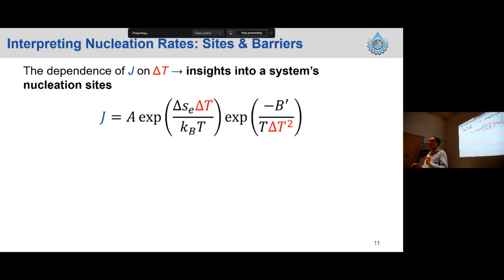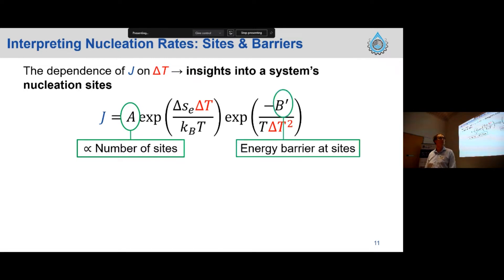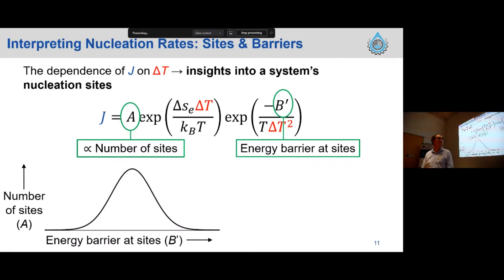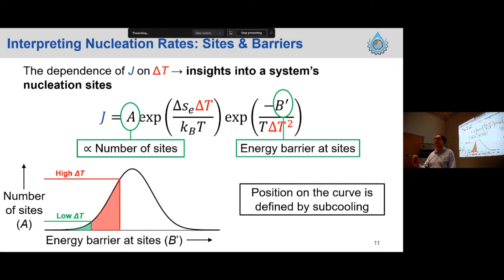The main point to take away from the CNT equation is that if we plot J as a function of subcooling, we can get information about parameters A and B'. What A tells us is information about the number of sites in our system, and B' tells us about the energy barrier at these sites. So if we measure J at many different subcoolings, we can get this fundamental insight from nucleation theory. Different systems will have different numbers of nucleation sites. We might imagine this is what the site energy distribution looks like in our system — a conceptual picture. Where we are on this curve, or how many sites are accessible, depends on what subcooling we're at. At low subcooling, we can only access the low-energy sites, but when we increase subcooling, we can access more sites — meaning our high subcooling nucleation rate is much higher.